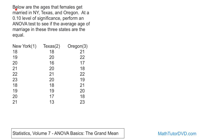But this is a real problem. Below are the ages that females get married in New York, Texas, and Oregon. So we have New York, Texas, and Oregon, with some numbers written down. These are the ages that girls get married — in New York we have one person married at 18, one at 19, and so on. There are 10 people sampled in New York, 10 in Texas, and 10 in Oregon.